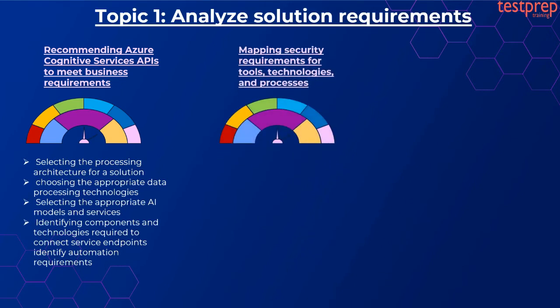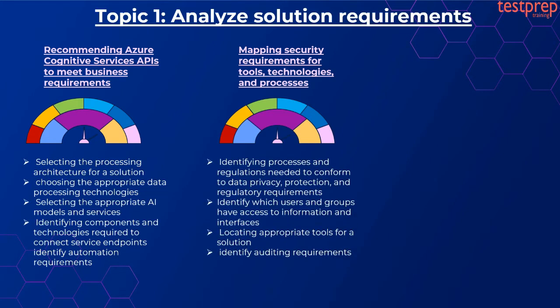Number two, mapping security requirements for tools, technologies, and processes. It contains four subtopics: first, identifying processes and regulations needed to conform to data privacy, protection, and regulatory requirements; second, identifying which users and groups have access to information and interfaces; third, locating appropriate tools for a solution; fourth, identifying auditing requirements.